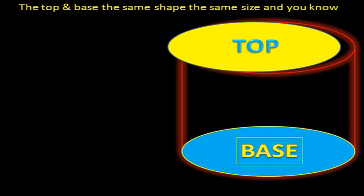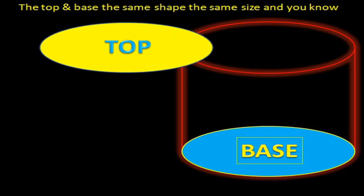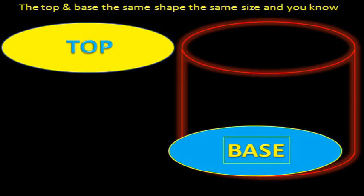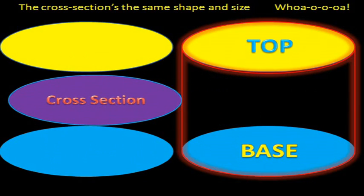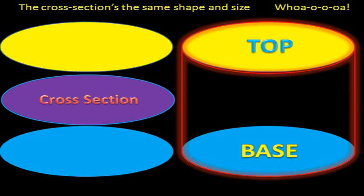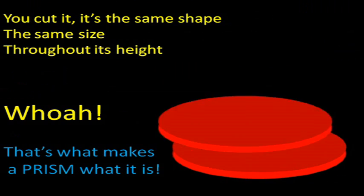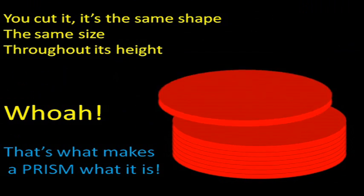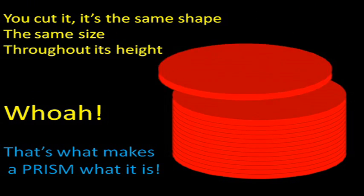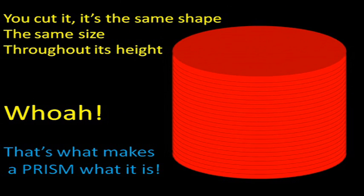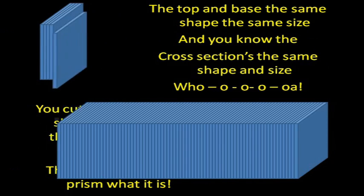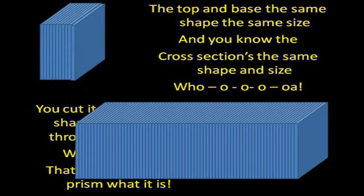The top one makes the same shape, the same size. And you know your cross-section's the same shape inside. Whoa, you cut it, it's the same shape, the same size throughout its heart. Whoa, that's what makes a prism what it is.